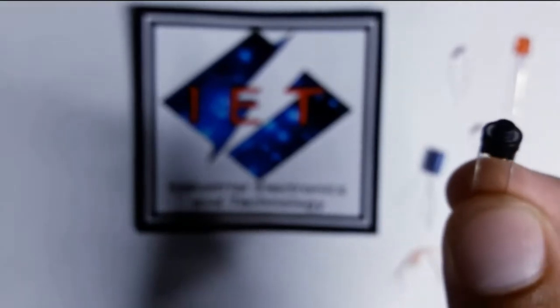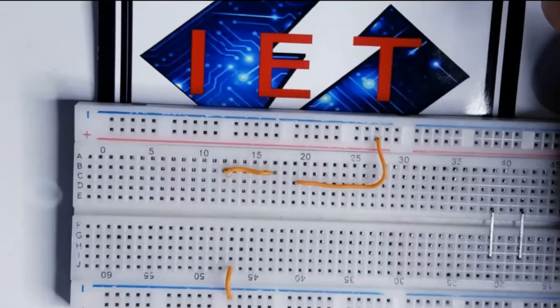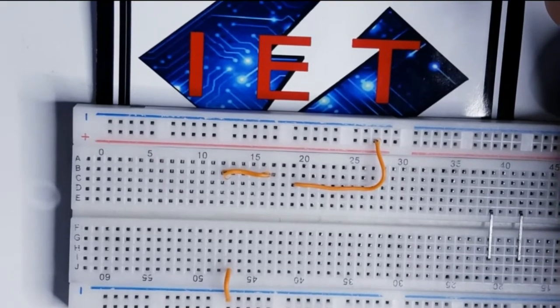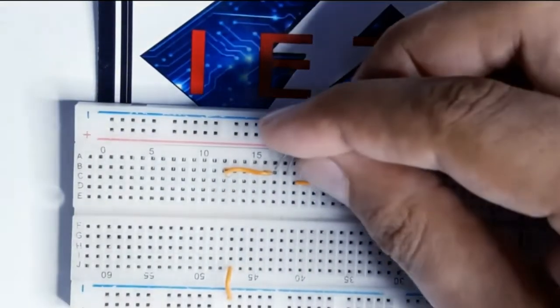Now let's build it. I have already done the jumper's work to save the time. Let's attach the BC547 IC or the transistor.